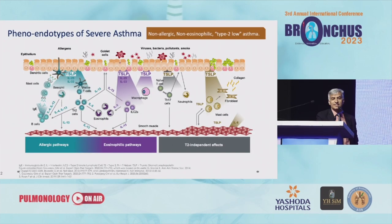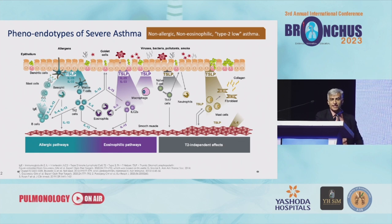What is T2 inflammation? This picture beautifully shows it is either driven by IgE or eosinophils. And if not, it is T2 low — not allergic, not eosinophilic. Different cells and different cytokines: IgE, eosinophil, IL-5, IL-13, IL-4 on one side. Neutrophils, TH-17 cells — totally different mechanisms on the other side.